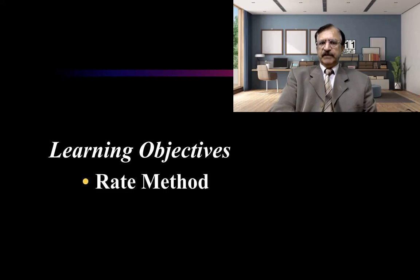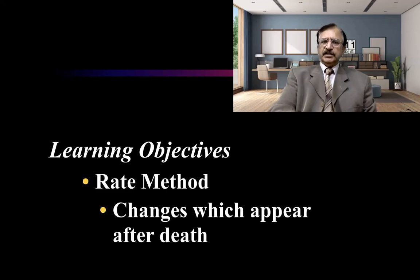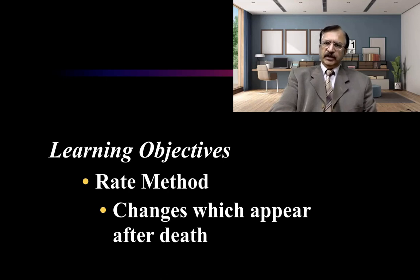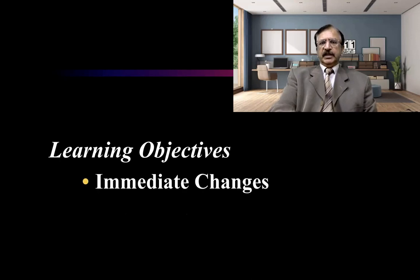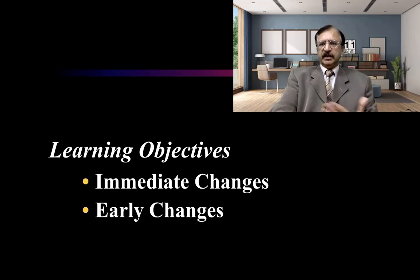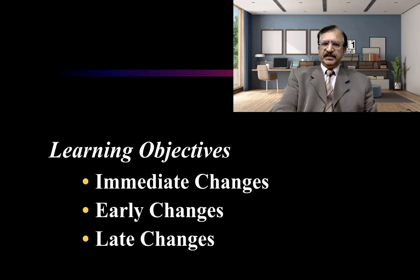The rate method is basically the changes which appear after death. We study the changes — in which state they are — and correlate them with time, then give the time bracket of the post-mortem interval. These changes include the immediate changes, which are the signs of death, the early changes which appear after some time, and the late changes.